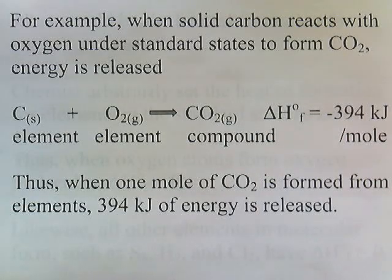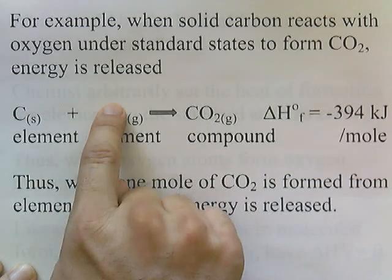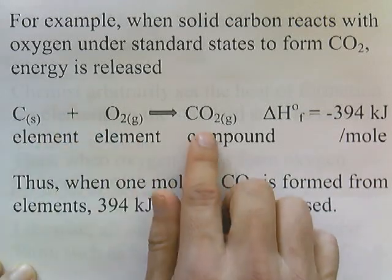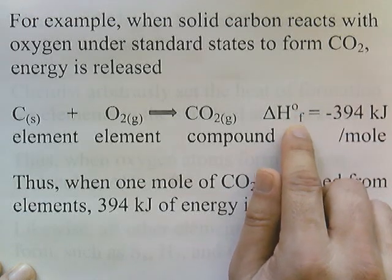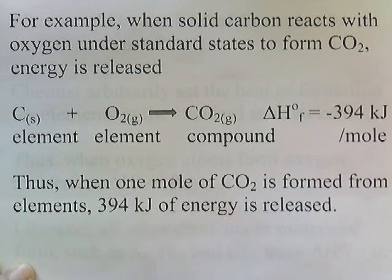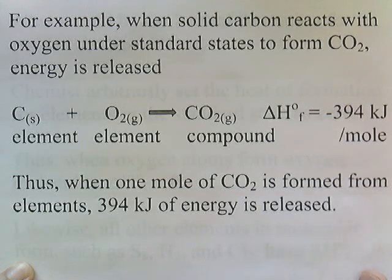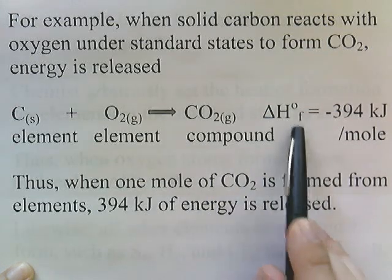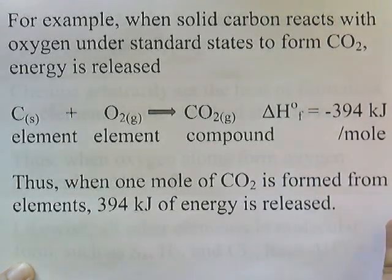For example, when solid carbon reacts with oxygen under standard state conditions to form carbon dioxide, energy is released. Carbon, which is an element, combines with oxygen, which is an element, to form a compound. Anytime you have elements combining to form a compound, this delta H is a special type of delta H — it's the heat of formation or enthalpy of formation. When one mole of carbon dioxide is formed from the elements, 395 kilojoules of energy is released. The zero indicates that it's occurring under standard state conditions.